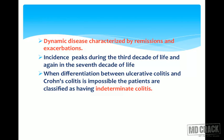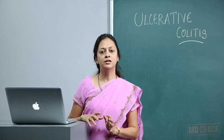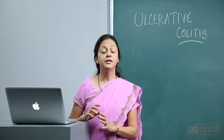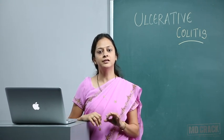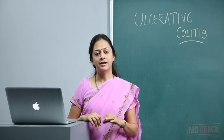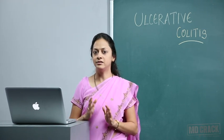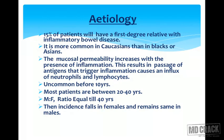Incidence peaks during the 3rd decade of life and again in the 7th decade of life. When differentiation between ulcerative colitis and Crohn's colitis is impossible, the patients are classified as having indeterminate colitis. When you cannot determine whether it is Crohn's or ulcerative, then it is indeterminate colitis — it is not something in between Crohn's and ulcerative.